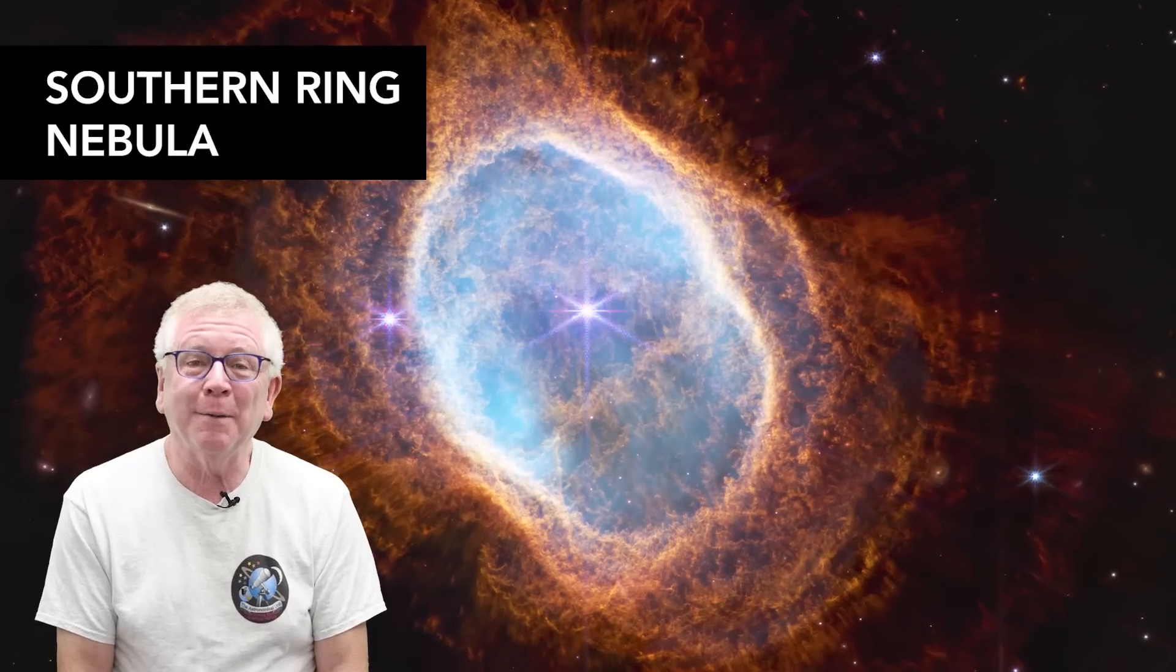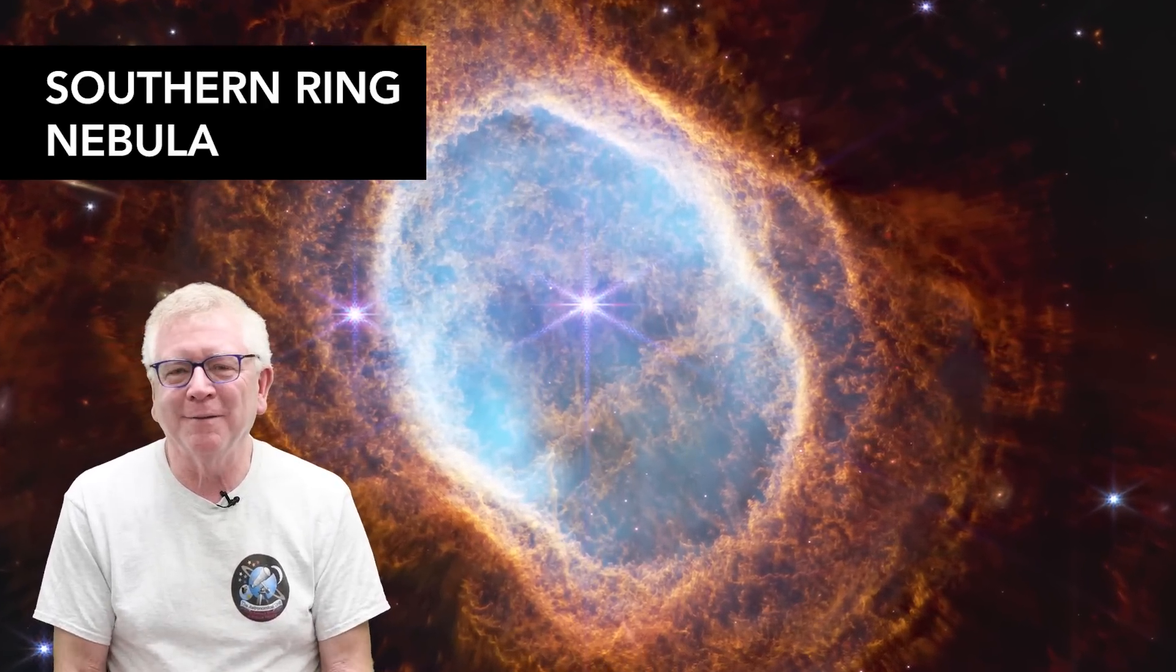And this is an object called a planetary nebula, which is where a low-mass star like our sun basically burps itself to death and throws off its outer layers. And the core collapses to form a white dwarf, giving off ultraviolet light, making the layers it barfed off fluoresce like in a neon light.